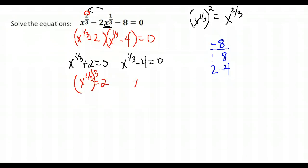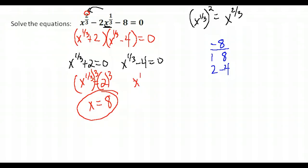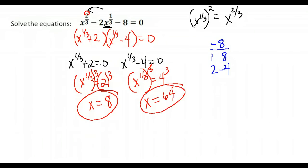To get rid of the one-third power, take it to the third power. For x to the one-third plus 2 equals 0: x to the one-third equals negative 2, so x equals negative 8. For x to the one-third minus 4 equals 0: x to the one-third equals 4, so x equals 64. The two solutions are x equals negative 8 and x equals 64.